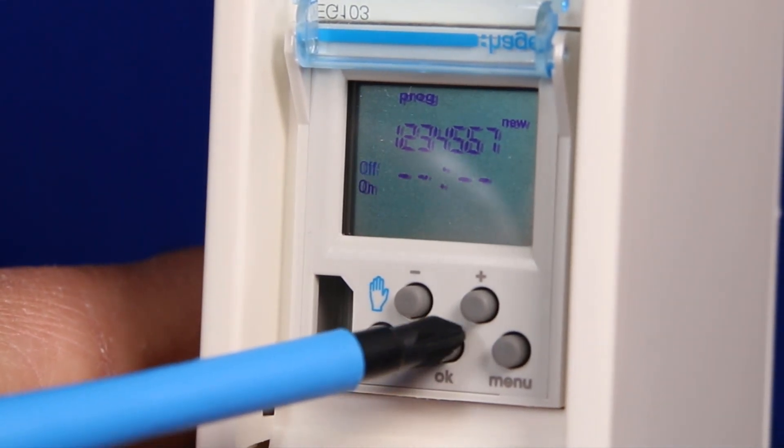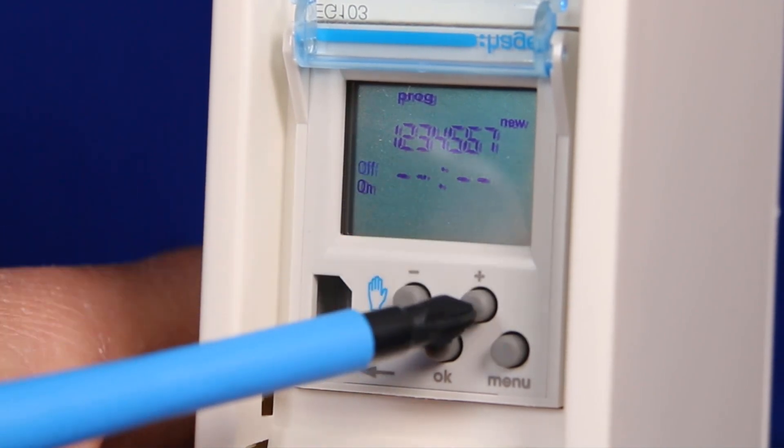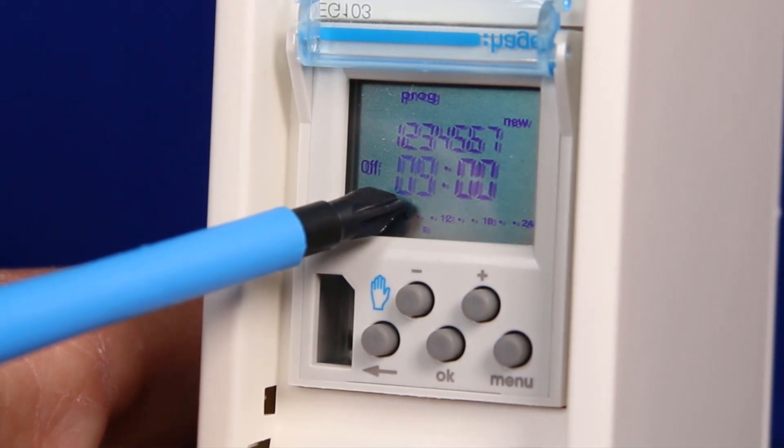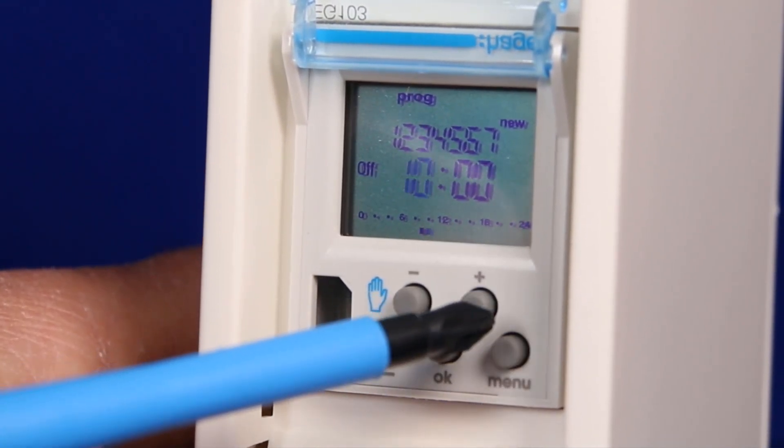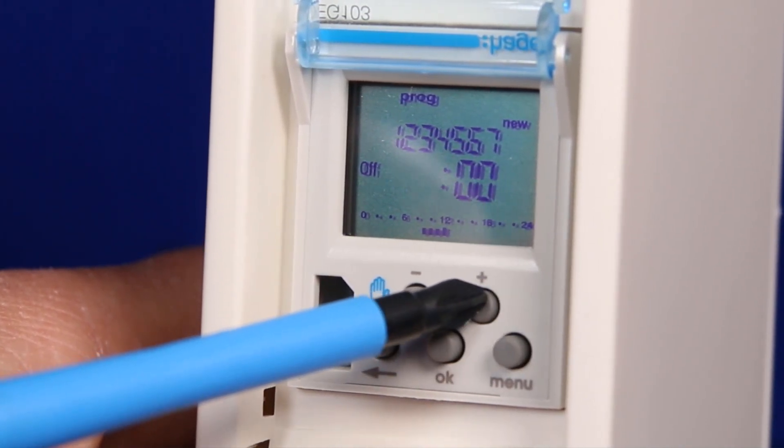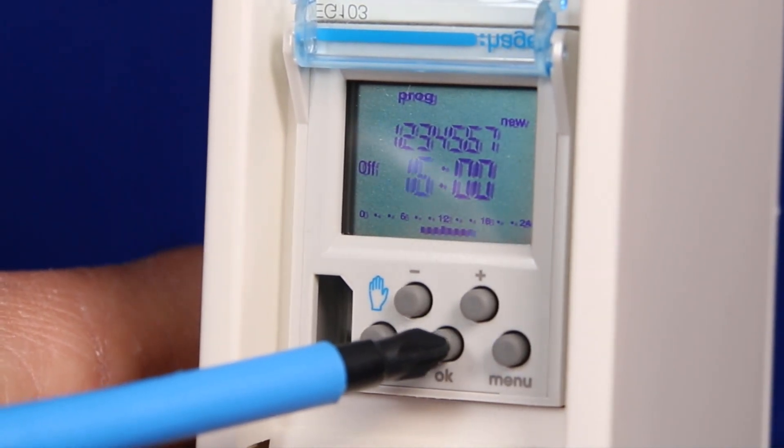We can now see that off is flashing indicating that it's asking us to program the off time. If we have to program the off time we simply say ok and as you can see the hours start flashing again starting from 0900 because that's where the on time is programmed. Pressing the plus button until we get to 1600 or four o'clock in the afternoon is selecting the off time.